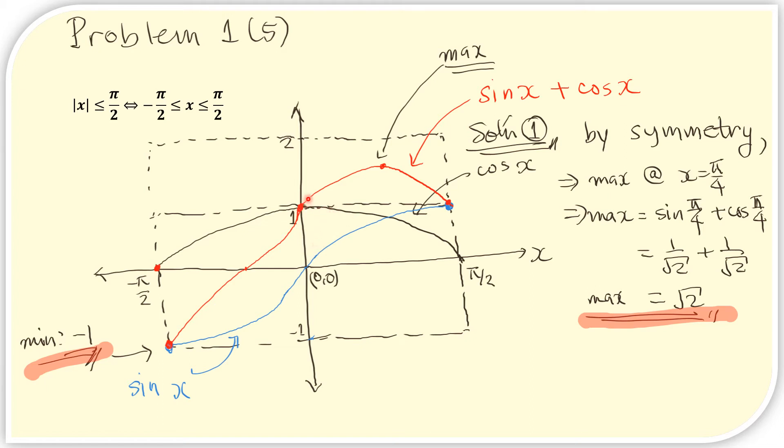And we notice that this part here, the sine curve increases more than the cosine curve is decreasing. So we have a slight increase. The same could be said about this part here. And so by just connecting the dots, we know that there will be a maximum somewhere here at the middle.